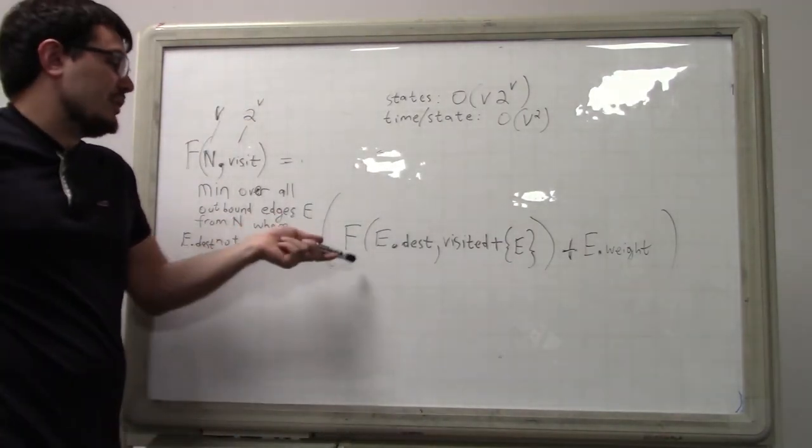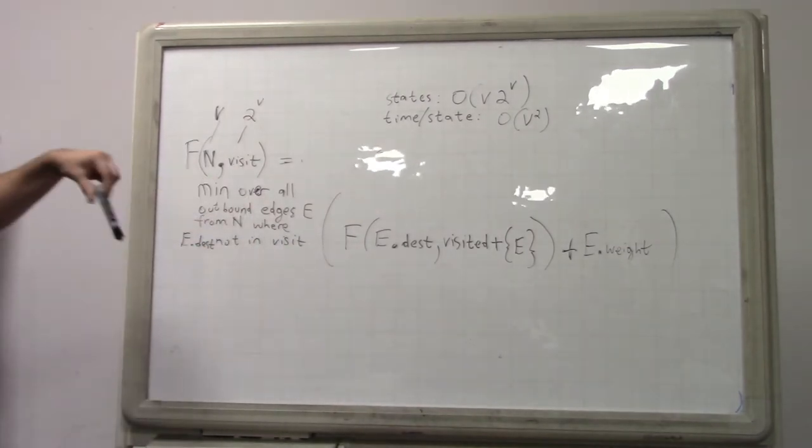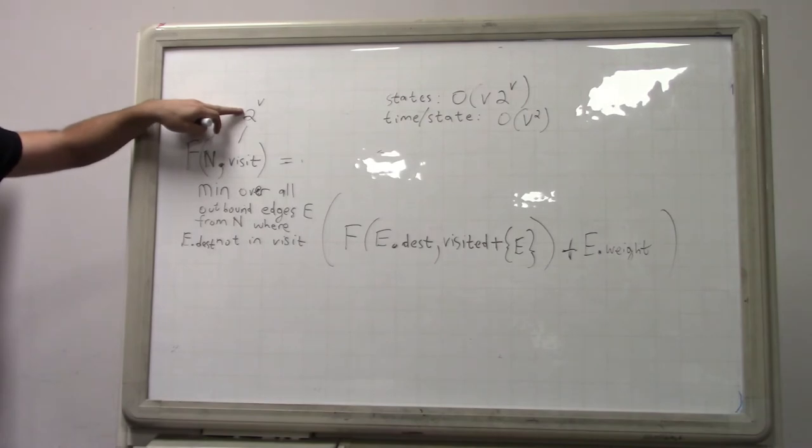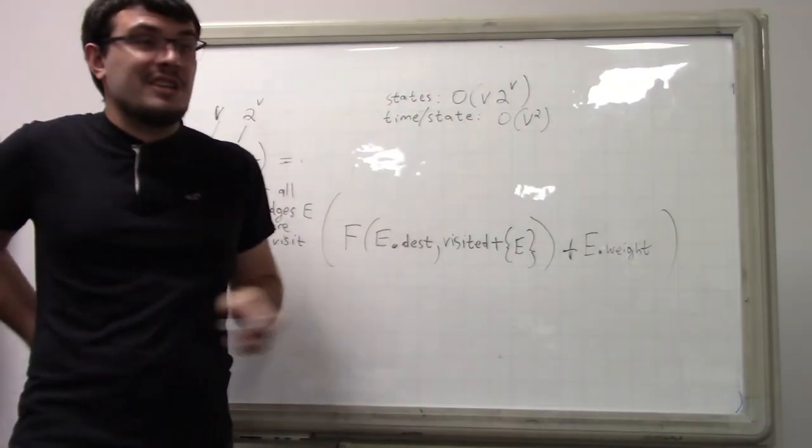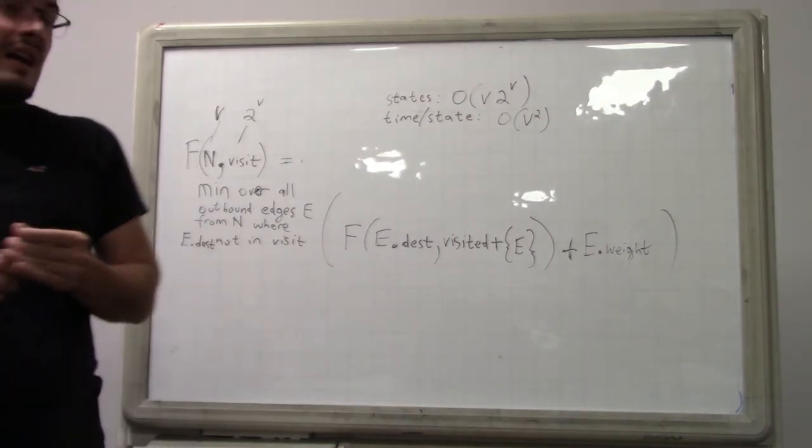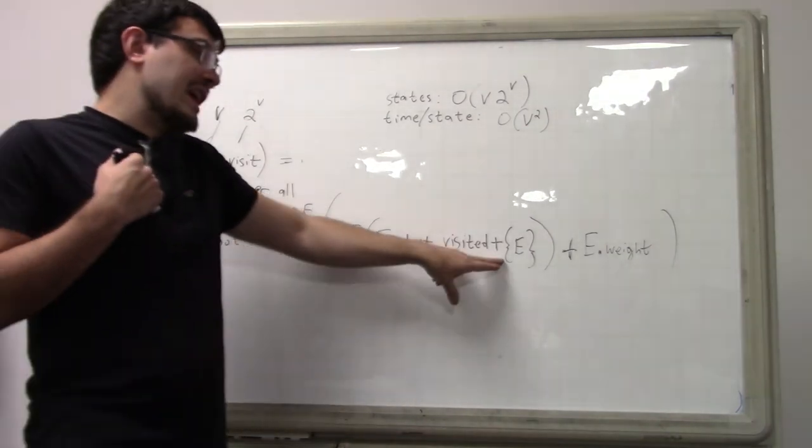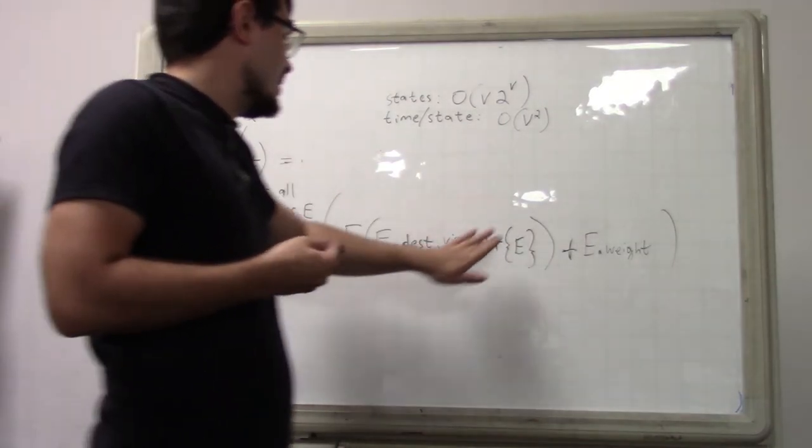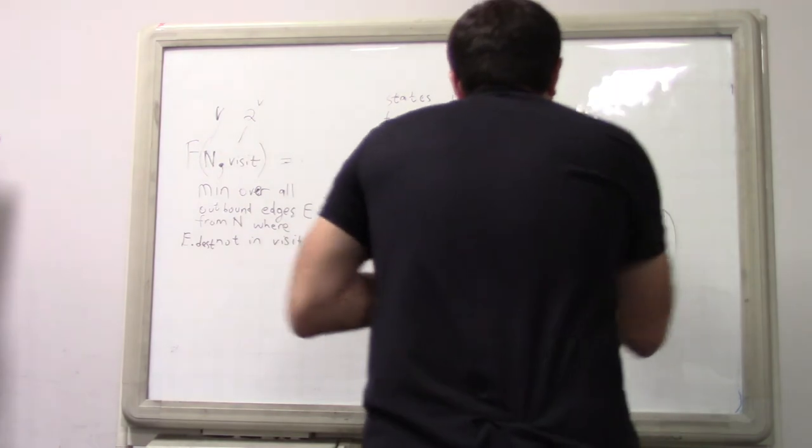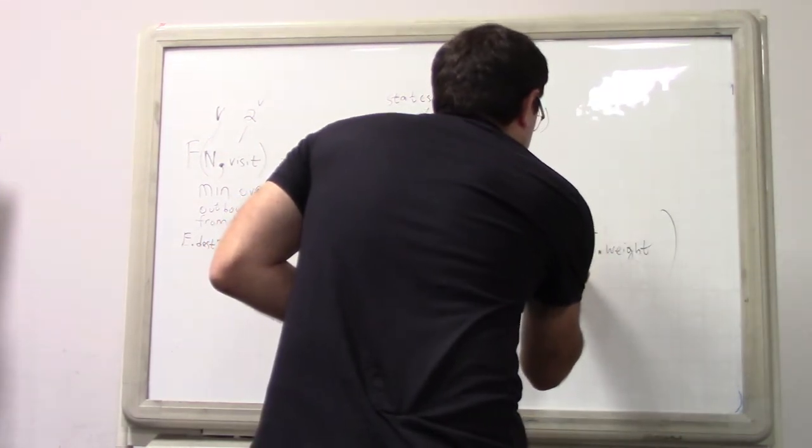Yeah, so here what happens is like now this visited set is an integer. It still has two to the v states. Don't get me wrong here because you still have every possible combination of the bits that it can set. But the difference is that if you just want to add, you want to add... well, this is actually E dot destination. It's not technically because this is that set of vertices not edges.